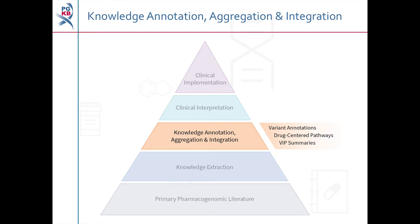When a research paper shows an association between a specific genetic variant and a drug, our curators will create a variant annotation, found in the knowledge annotation, aggregation and integration step of the pyramid. Variant annotations report the findings from a single publication. They use standardised terms and a uniform sentence structure, are integrated into our knowledge base enabling them to be easily searched or downloaded, and are linked to the relevant gene, drug and disease pages.